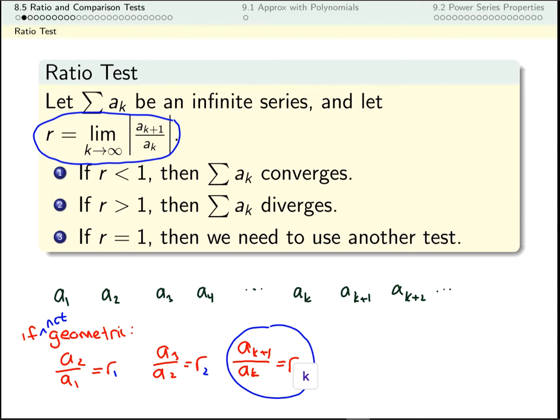And the ratio test says this r behaves similarly to the r from a geometric series. If this ratio is less than 1, my series acts like a geometric series with ratio less than 1 and it converges. If this limit is greater than 1, my series acts like a geometric series with ratio greater than 1 and it diverges. If it's equal to 1, we need to try something else.